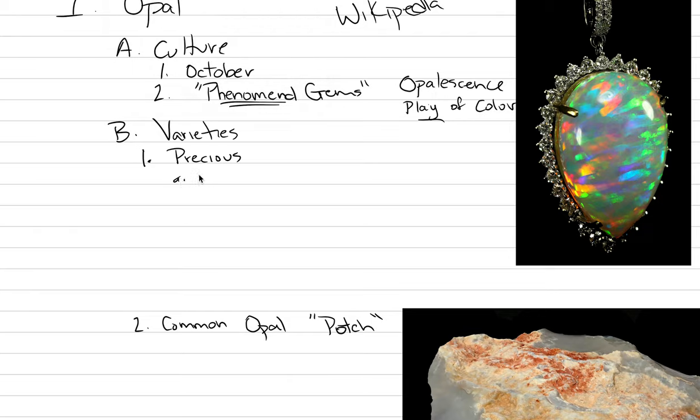So of our different varieties, the most expensive type of opal is called black opal, and this is where the background color is dark gray to black. The reason why this is the most valuable type is because this background color allows for the opalescence or play of color to be the most pronounced.